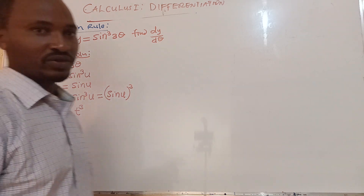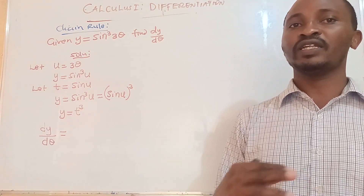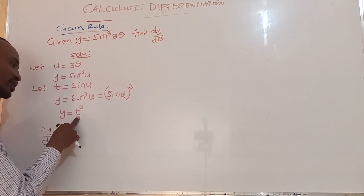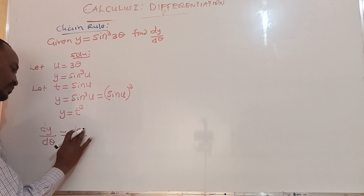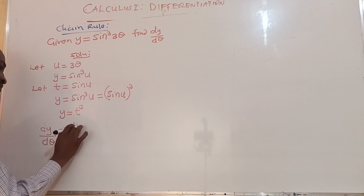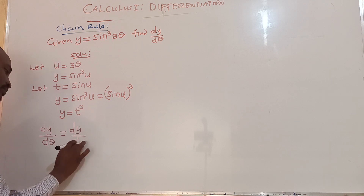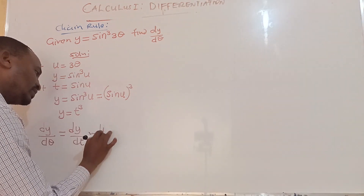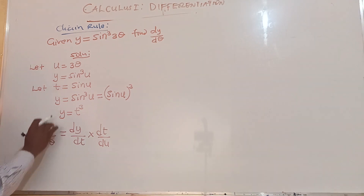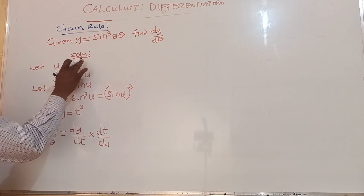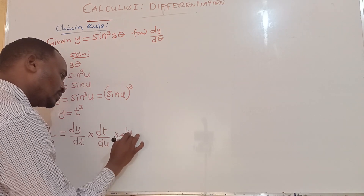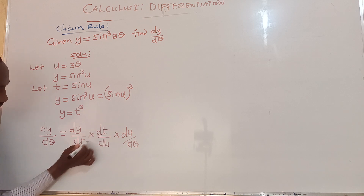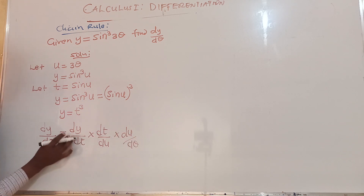Now dy/dθ will be a product of the derivatives of those three functions. We need to differentiate y with respect to t to get dy/dt, differentiate t with respect to u to get dt/du, and differentiate u with respect to θ to get du/dθ. Notice that the dt and du terms cancel out, leaving dy/dθ.